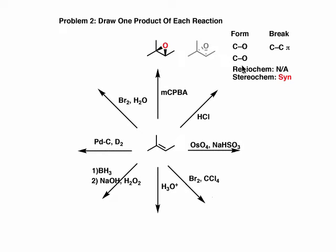Pay attention to the bonds that are forming and breaking in this reaction. We're forming two new carbon-oxygen bonds and breaking a carbon-carbon pi bond. The regiochemistry of this reaction is not applicable because oxygen — the same atom — is adding to both carbons of the alkene, so there's no regiochemistry issue. However, stereochemistry is very important. It's very important to show that both new bonds to oxygen are on the same face of the alkene — either both wedges or both dashes — and this is what we refer to as syn stereochemistry.